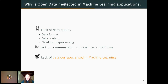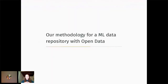We also believe that there might be a lack of communication about these platforms — maybe people are not always aware of their existence. And finally, and this is what we decided to work on, there is a lack of catalogs, a lack of data repositories that are specifically specialized in machine learning. So what we did was have a look at the most famous existing data repositories, mainly UCI machine learning repository and OpenML, and we decided to create our own data repository for machine learning using open data from data.gouv.fr.